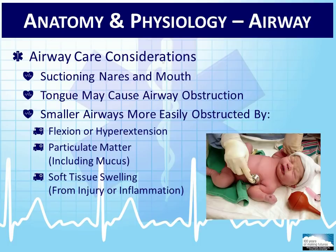Children compensate for airway obstructions by increasing respiratory rates and effort. Multiple factors make it harder for children to compensate than adults, such as a flexible ribcage, weaker intercostal muscles, and diaphragmatic or abdominal breathing. Children in respiratory distress are considered true emergencies as respiratory muscles can fatigue rapidly, leading to respiratory failure and subsequent arrest with very little warning.